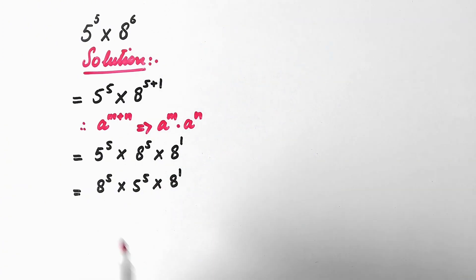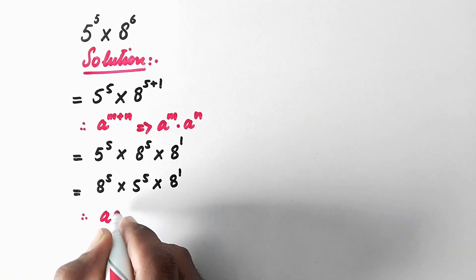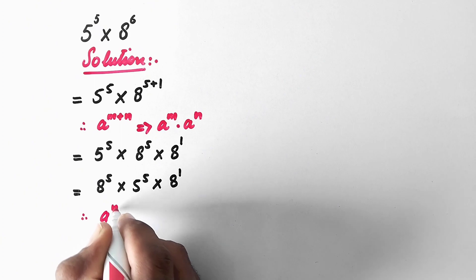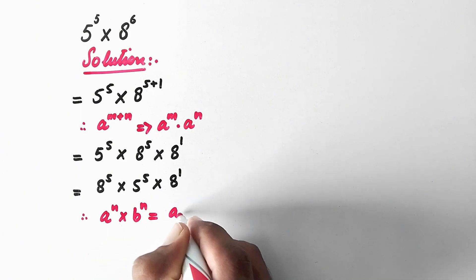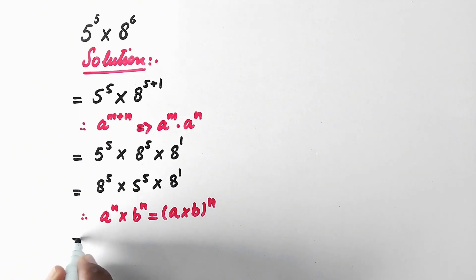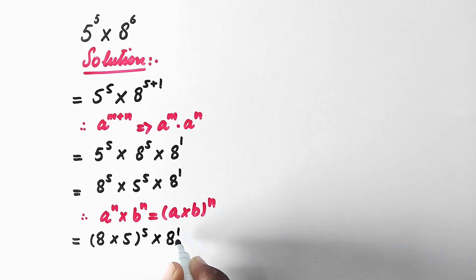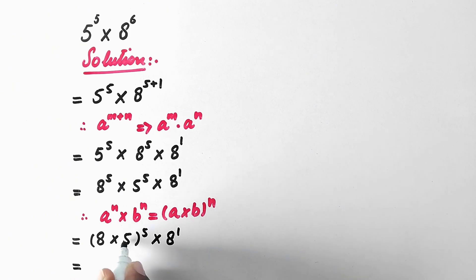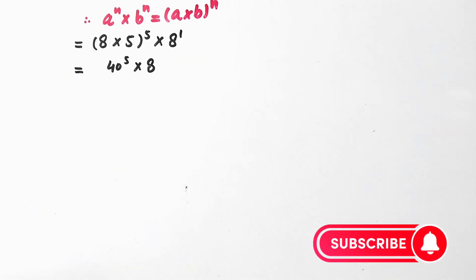Here we can apply another rule of exponents. As we know, a value a having power n multiplied by value b having power n can be written as a times b, all raised to power n. So here we can write the expression using this rule.